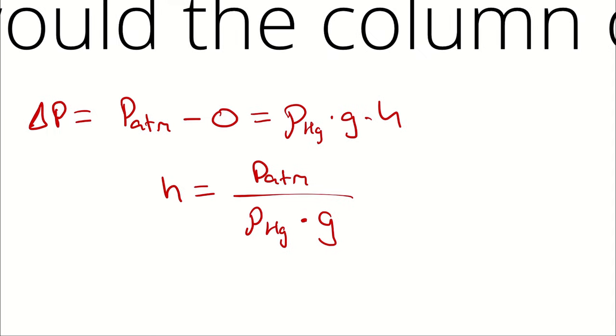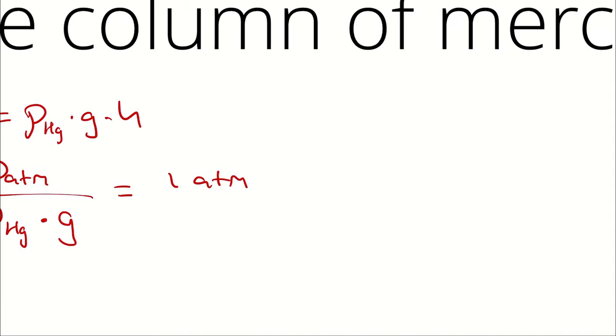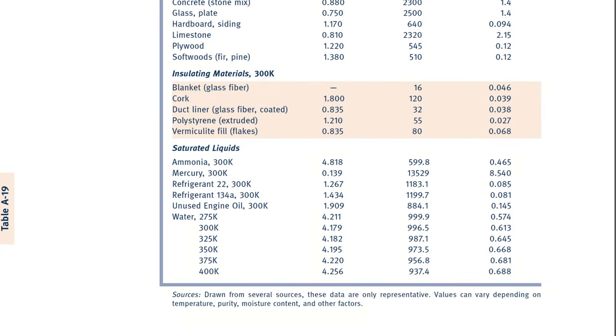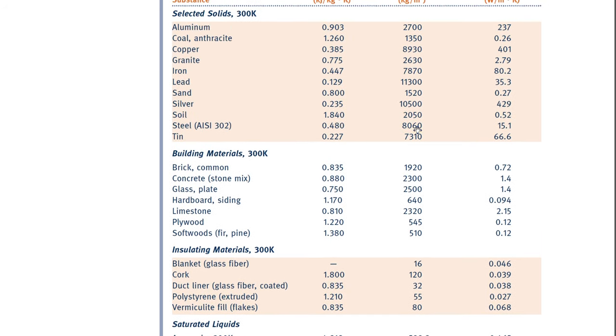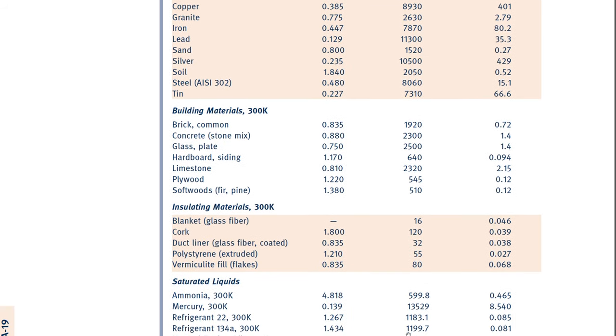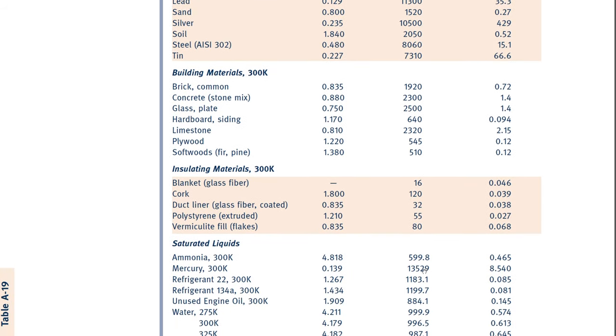If atmospheric pressure is one atmosphere, and the density of mercury I retrieved from table A19 of my textbook, where density is the second column here, being 13,529.